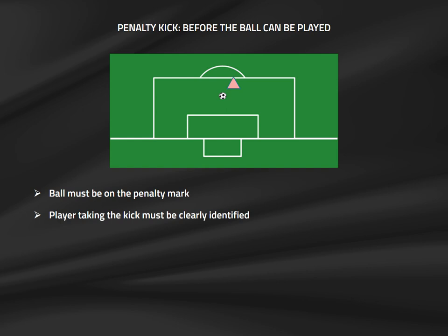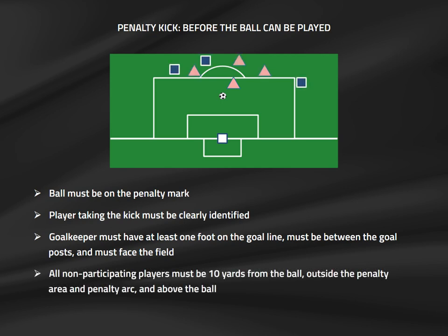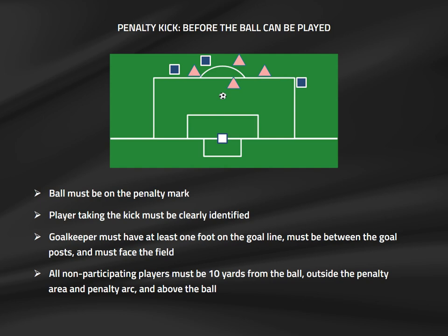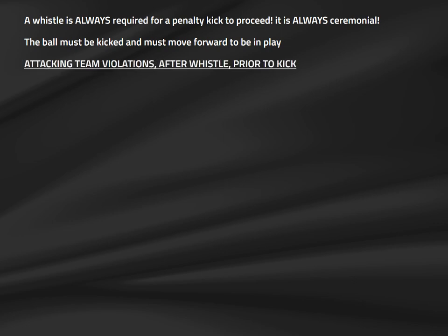Player positioning is very important at the taking of a penalty kick. The goalkeeper must have at least one foot on the goal line and must face the kicker. All players except the kicker must yield 10 yards — they must be outside the penalty arc, not inside the penalty area, and must be above the ball, meaning they cannot be closer to the goal line than 12 yards on the lateral sides of the penalty area. The positioning of all players should be checked and double-checked before allowing the kick to proceed. A penalty kick requires a referee's whistle to proceed.